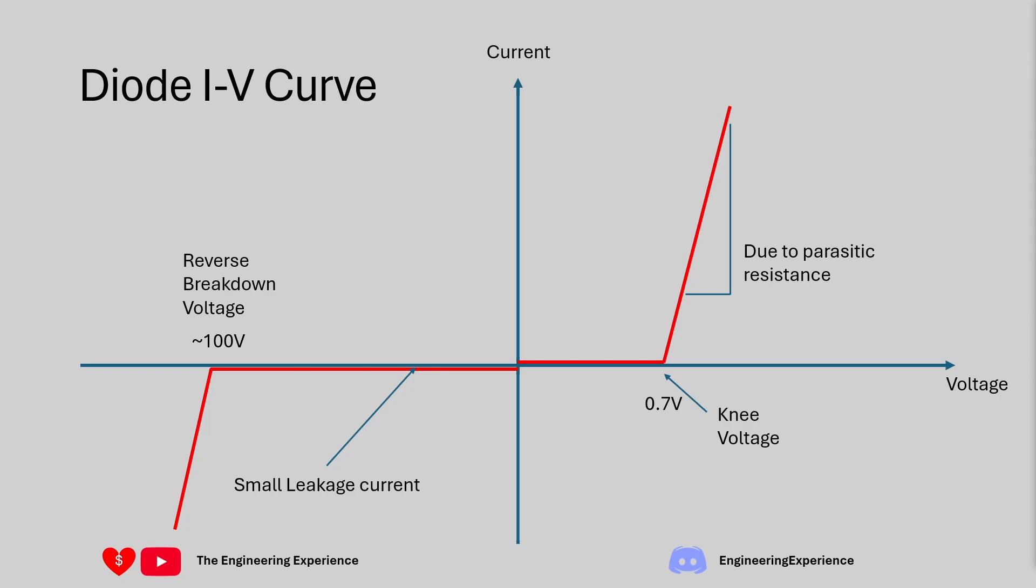There are some diodes that are specially designed for this feature where the reverse breakdown voltage will be tuned such that it's much lower so something like 3.6 volts 3.9 volts and they are typically used to regulate voltage or TVS diodes which would be used to kind of prevent voltage ESD spikes from damaging circuits.